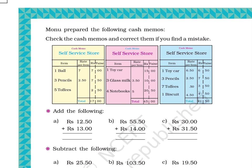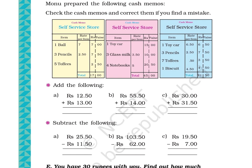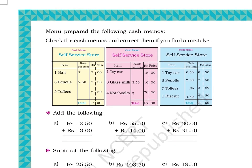Cash Memo 2 has columns: Items, Rate per item, Rupees, Paise. Row 2: One toy car, rate (blank), Rs. 15.00. Row 3: Three glasses of milk, rate 3.50, Rs. 10.50. Row 4: Four notebooks, rate 5, Rs. 20.50. Total: Rs. 45. Cash Memo 3: Row 2: One toy car, rate 6.50, Rs. 6.50. Row 3: Three pencils, rate 2.50, Rs. 7.50. Row 4: Seven toffees, rate 0.50, Rs. 3.50. Row 5: One biscuit, rate 4.50, Rs. 4.50. Total: Rs. 21.50.